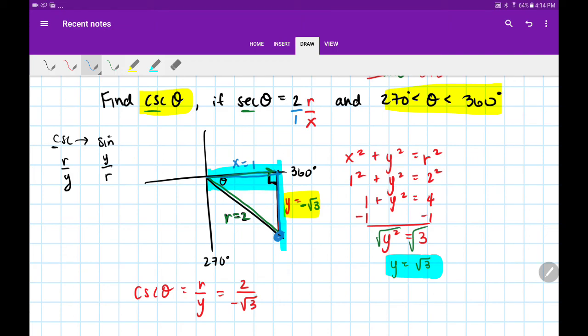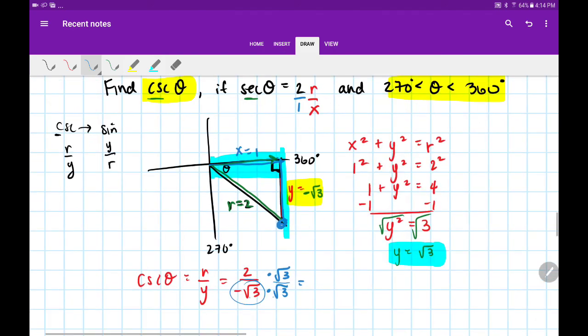We can't leave a square root in the denominator, so we're going to multiply the top and bottom by √3 to rationalize the denominator. Multiplying straight across, the numerator is 2 times √3, which is 2√3. In the denominator, negative times positive is negative, and √3 times itself is 3. This will be our final answer.